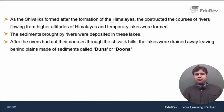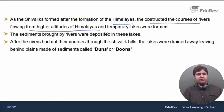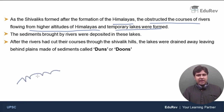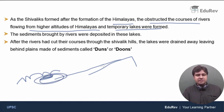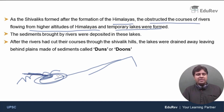As the Shivaliks formed after the formation of the Himalayas, they obstructed the courses of rivers flowing from the higher altitudes of the Himalayas, and temporary lakes were formed. Shivaliks formed at the end, so rivers coming from the Great Himalayas and Middle Himalayas were blocked by this newly formed range of low hills. These temporary lakes were filled with sediments that the rivers were carrying. Running water — rivers and streams — being one of the most powerful erosional forces, eventually cut through the Shivaliks and the lakes got drained away, leaving behind deposits of sediments.